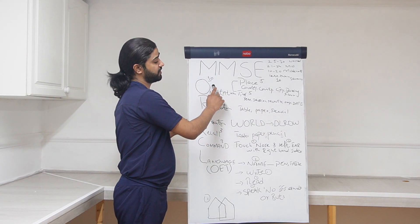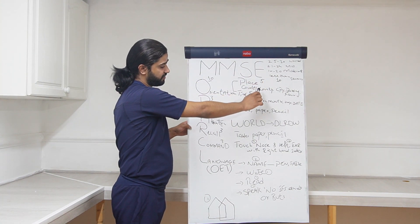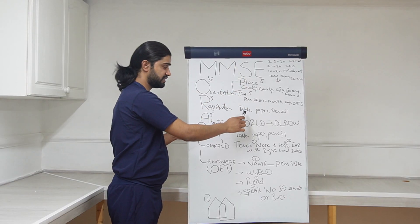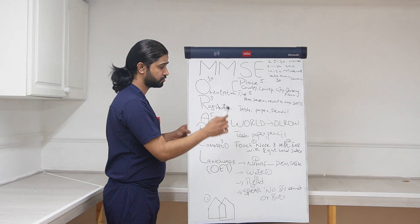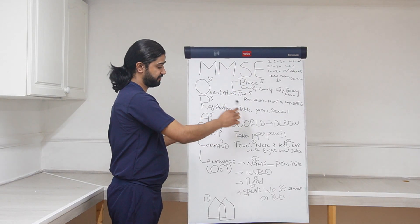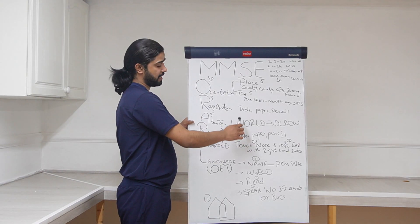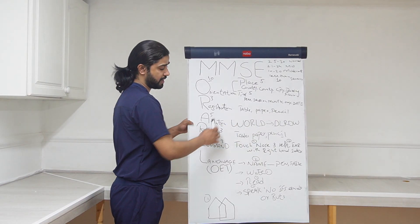10 marks for orientation, in which 5 for place orientation, 5 for time orientation, then 3 for registration, saying 3 words and asking to repeat and also recall afterwards as well. Then attention has 5 marks, asking to spell the word WORLD backwards.